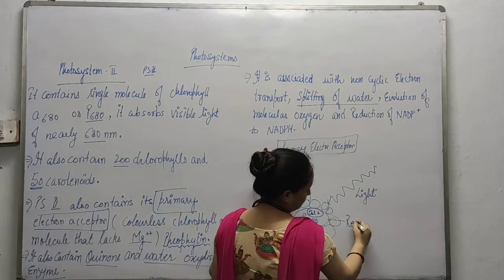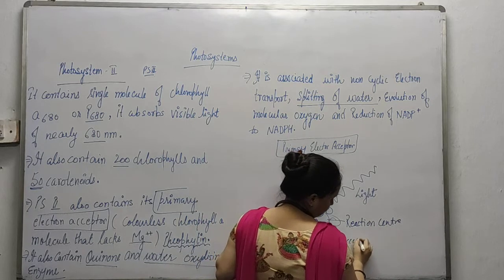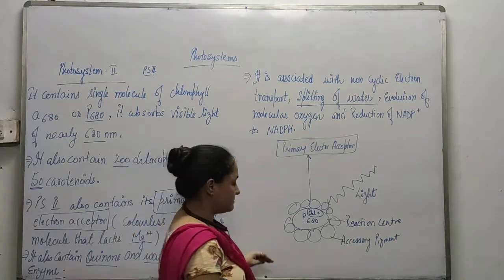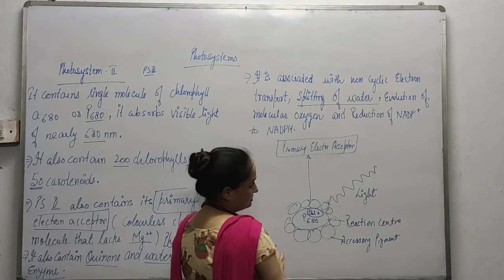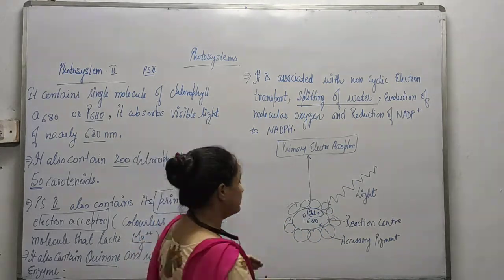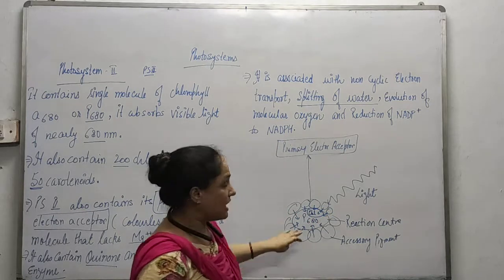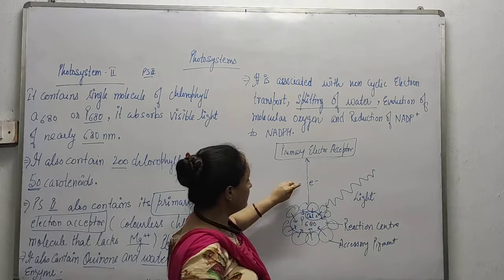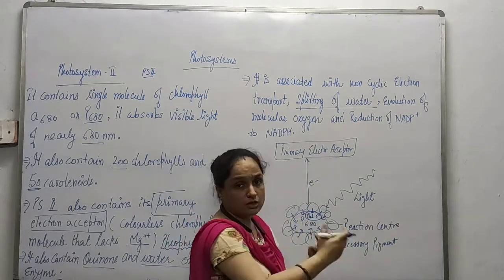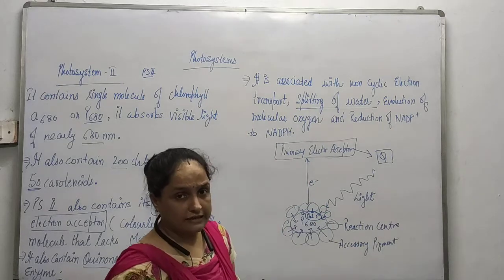Here in the diagram, this is the reaction center and these are the accessory pigments, which include both Chlorophyll A and B. The accessory pigments absorb light of various wavelengths and transfer that energy to the reaction center so it can get activated, release electrons, which are then accepted by the primary electron acceptor and passed on to the next electron acceptor, quinone.